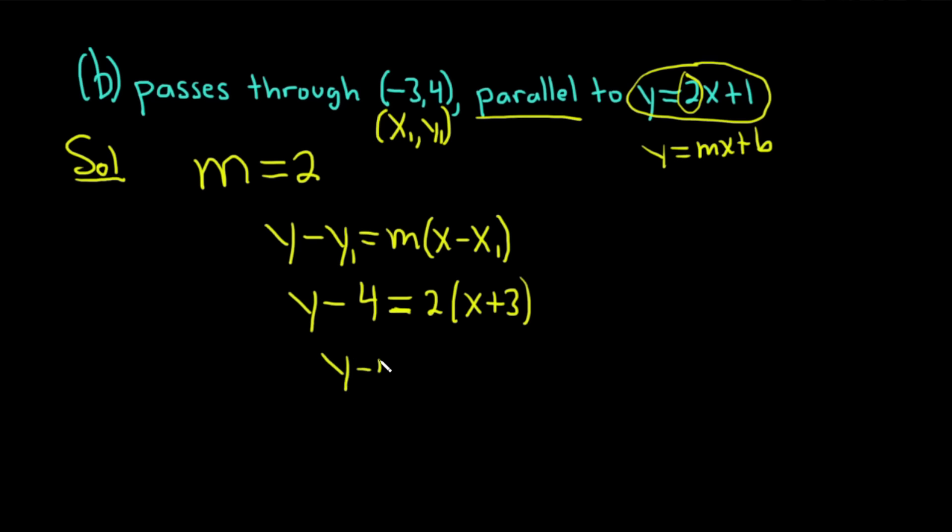Then y minus 4 is equal to, we can distribute here, 2 times x is 2x. And 2 times 3 is 6. And then we can just add 4 to finish up. Add 4 to both sides. And then so we end up with y equals 2x plus 10.